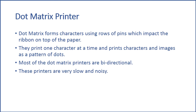The first one is dot matrix printer. It is an impact printer. Dot matrix forms characters using rows of pins which impact the ribbon on top of the paper. They print one character at a time and print characters and images as a pattern of dots. Most dot matrix printers are bi-directional.